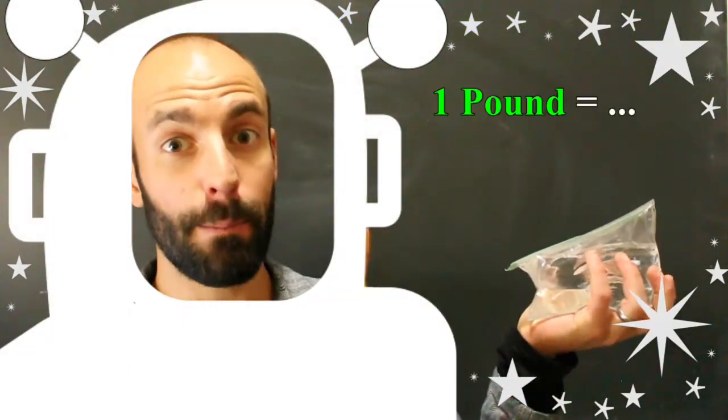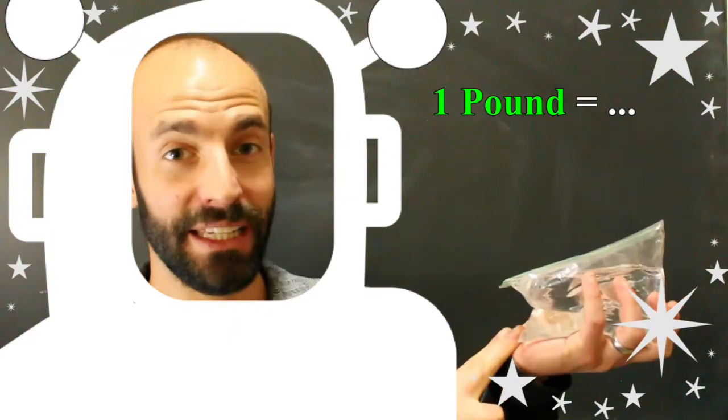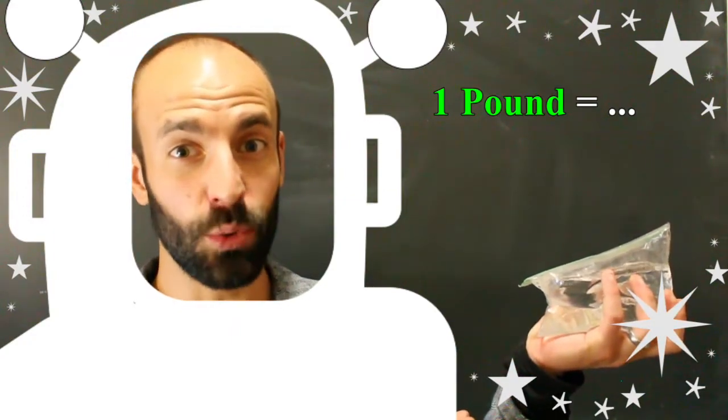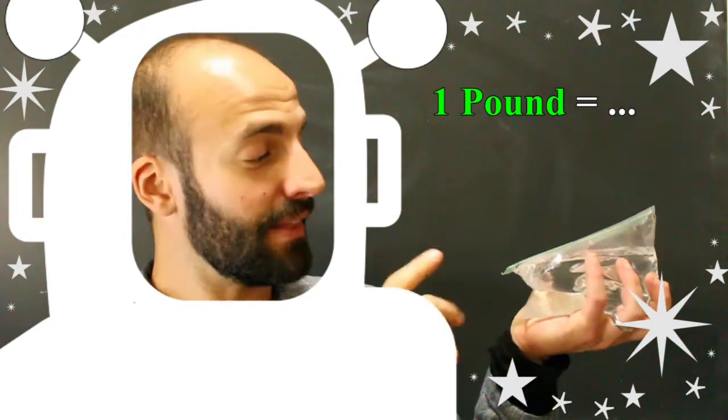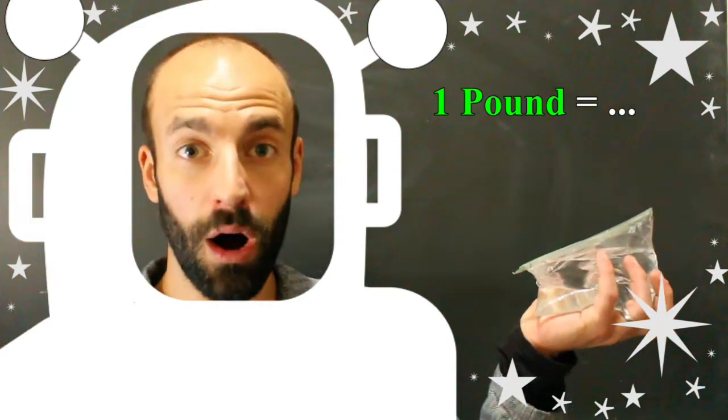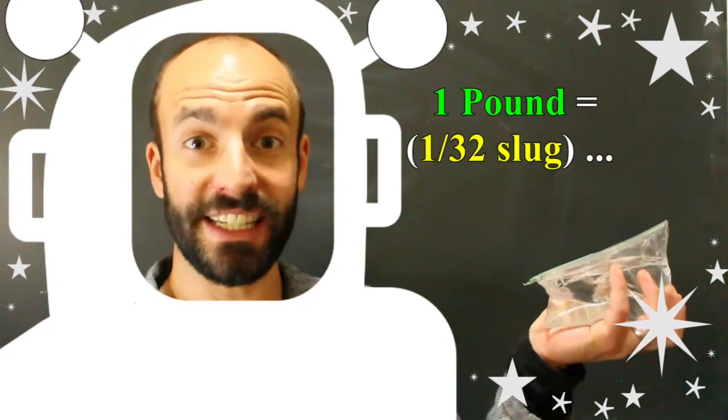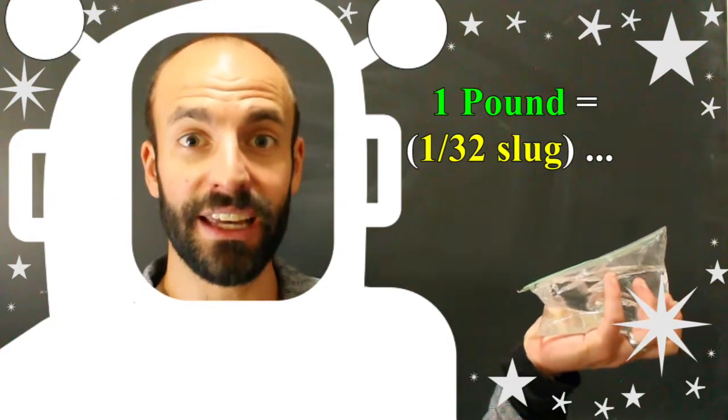Now to really wrap our heads around this, let's take a trip to outer space. Out here in space, we can look at mass independent of weight. Here I have a mass of water. On earth, this would weigh one pound. That means that 32 of these equals the mass of one slug. Because out here in space, this pound of water has 1/32 of a slug in terms of mass.